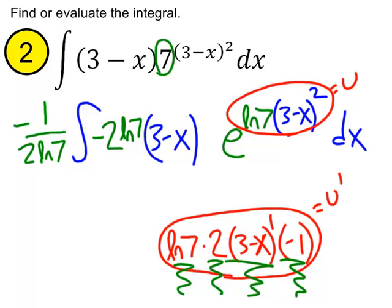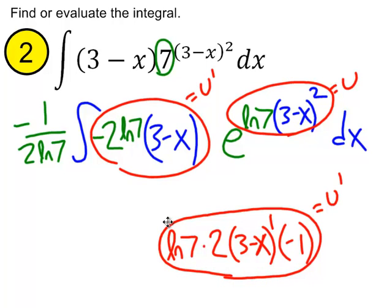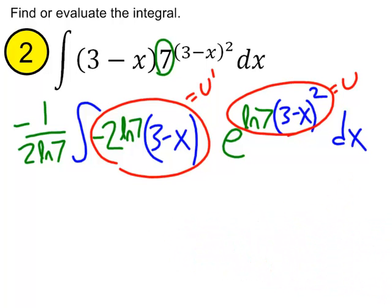So, again, we've now successfully got our u prime right here. And I can get this duplicate copy off the screen. And when we anti-derive, we'll get the original, or this exponential function, the e to the u power.